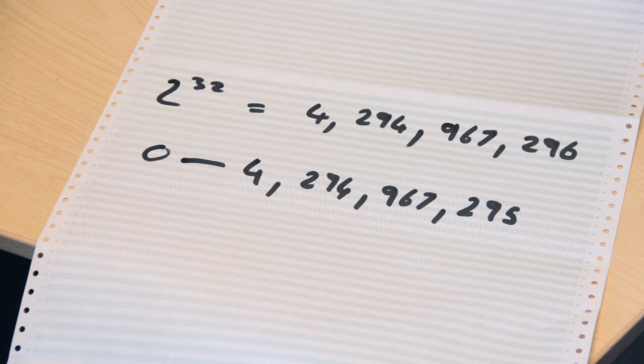Well, computers can also store negative numbers, and the way they do that is by using some of the bit patterns — the zeros and ones that make up that 32-bit integer — to mean negative numbers and others to mean positive numbers. So we get two billion positive numbers and two billion negative numbers, either side of zero.